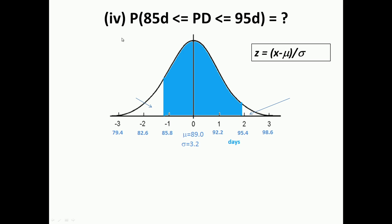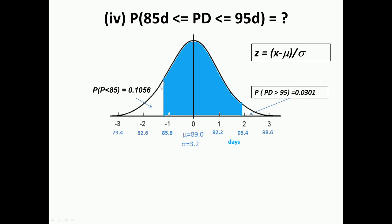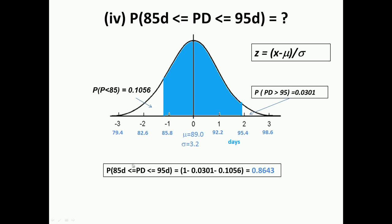The third probability question was: what is the probability that the project duration lies between 85 and 95 days? The shaded area represents P(85 ≤ duration ≤ 95). We can calculate it from our earlier values: the area beyond 95 was 0.0301, and the area below 85 was 0.1056. Since the total area under the curve is 1, subtracting both tails gives 1 − 0.0301 − 0.1056 = 0.8643. So the probability of the project duration lying between 85 and 95 days is 0.8643.